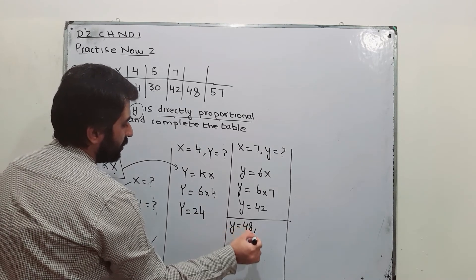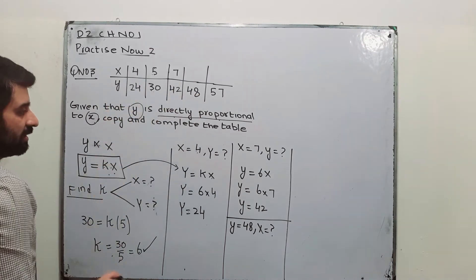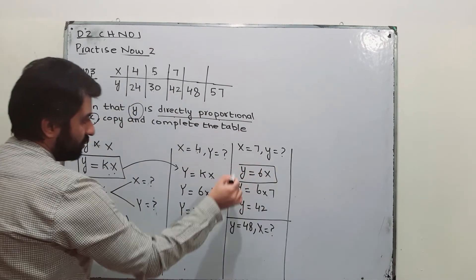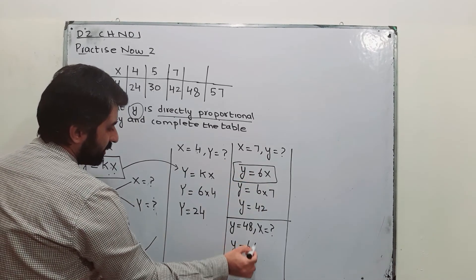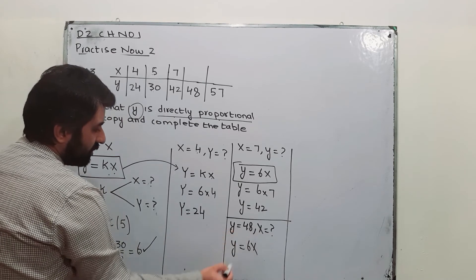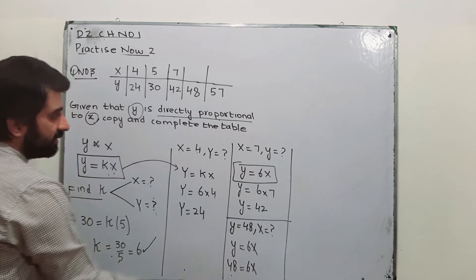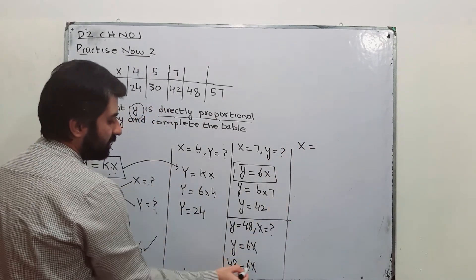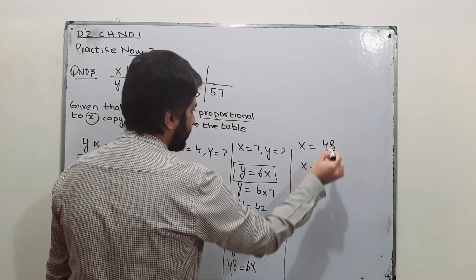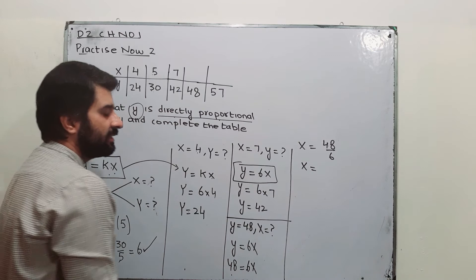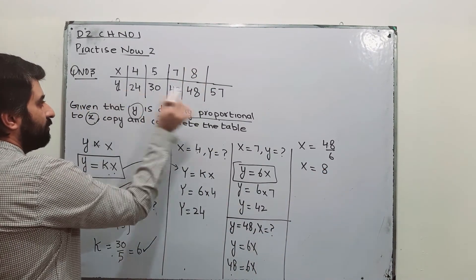Y is equal to K, K is 6. Y is 48 is equal to 6X. Divide by 6, so 48 divided by 6, X will be 8. When Y is 48, X is 8.